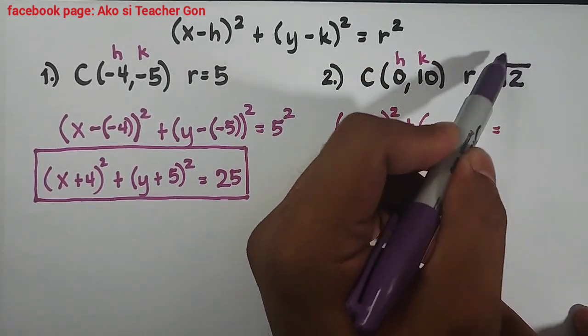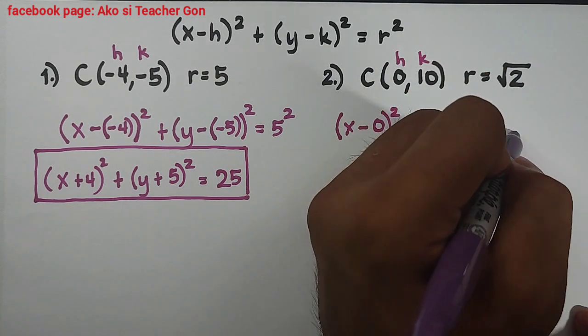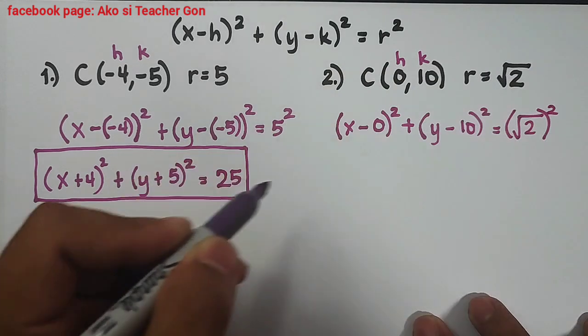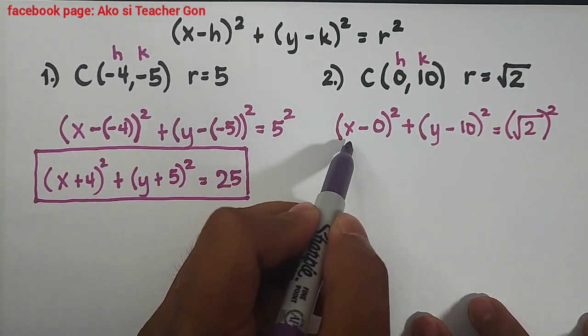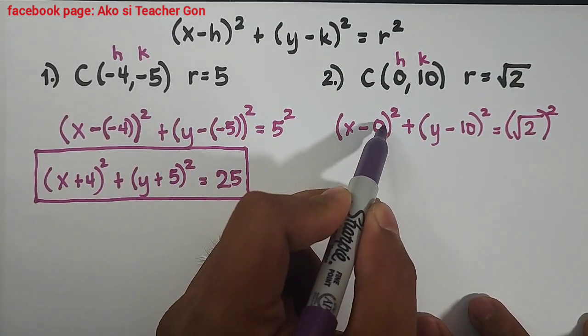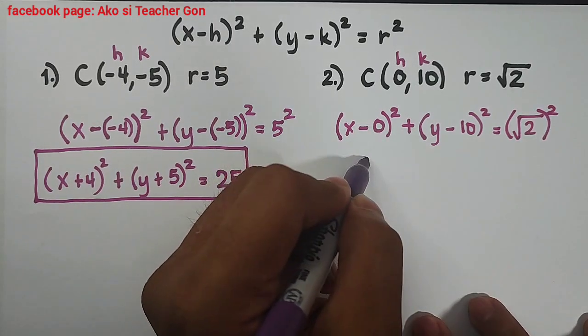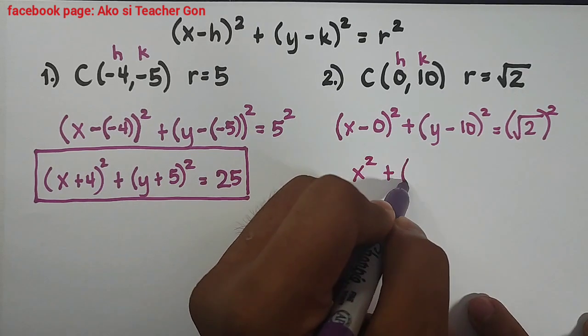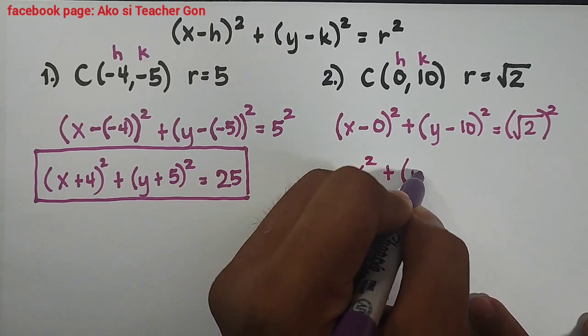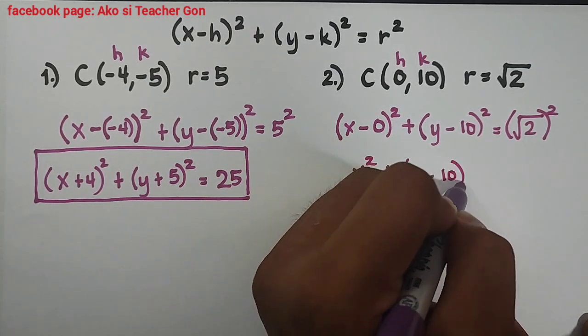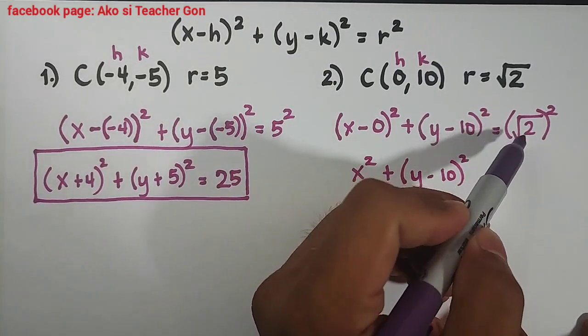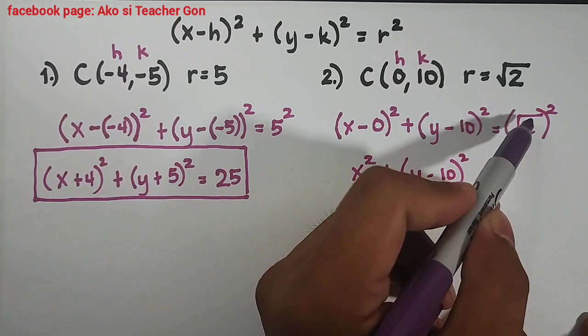Simplify. x minus 0 is x and then square, plus copy this one, quantity of y minus 10 square. And for this part when we square a radical, square root of 2 square, we can simply cancel out this radical sign and this 2 and it will become 2.